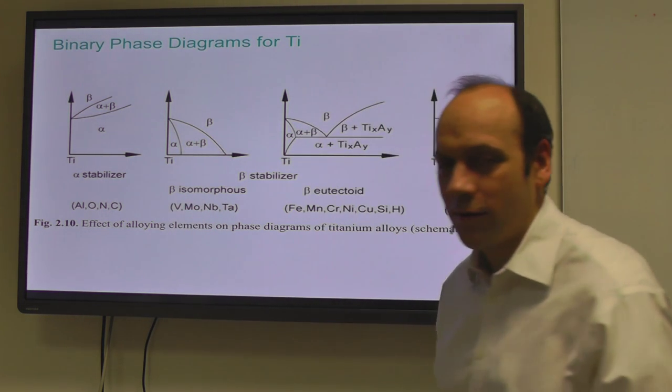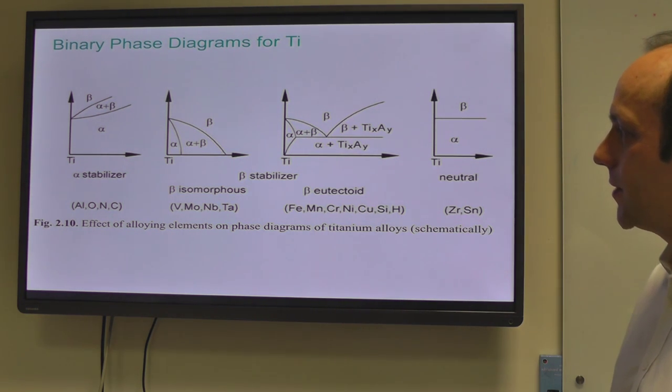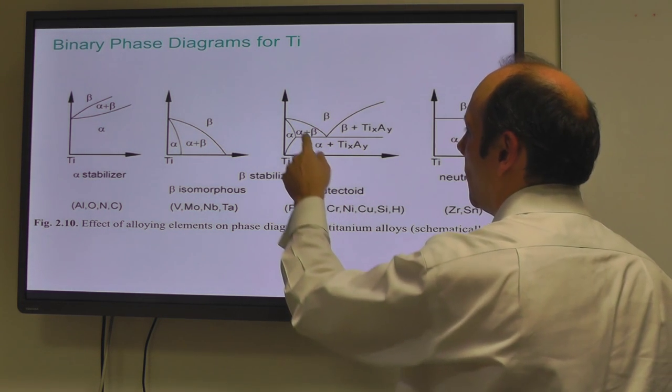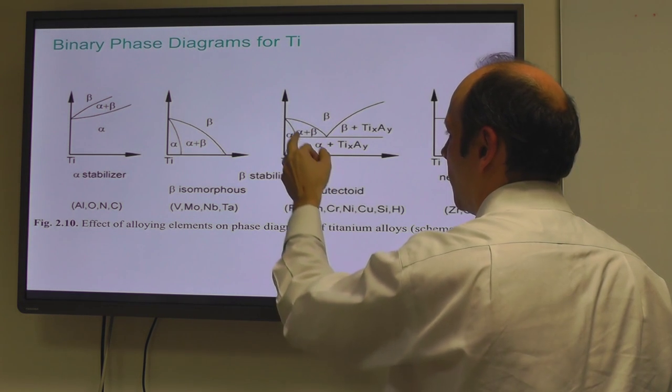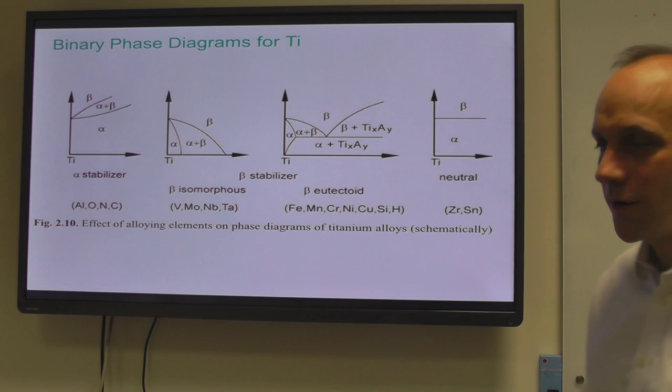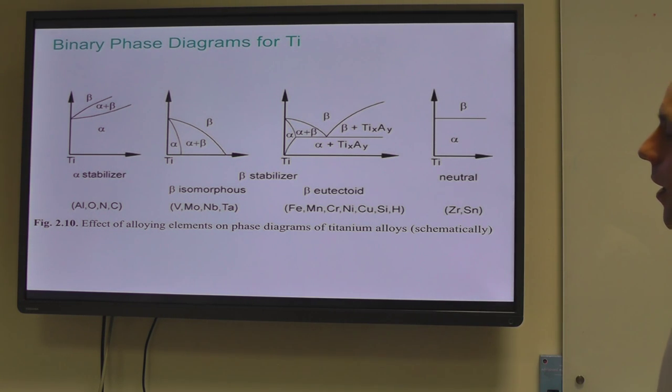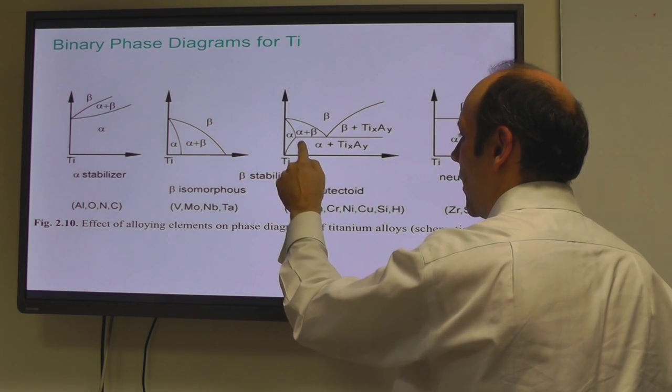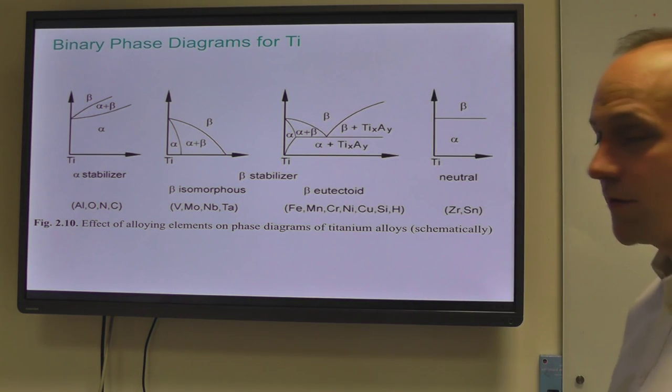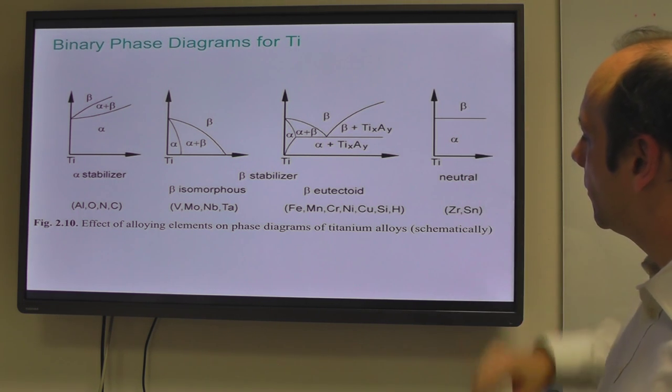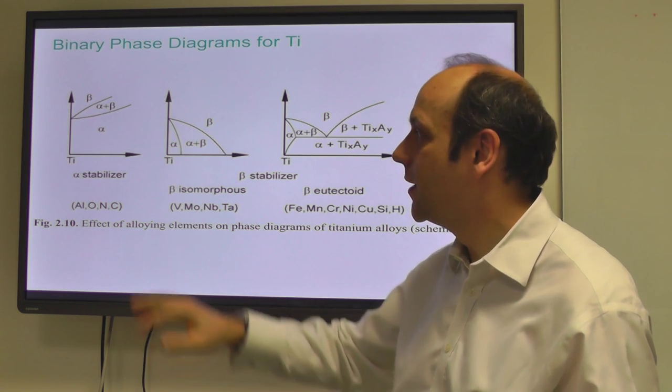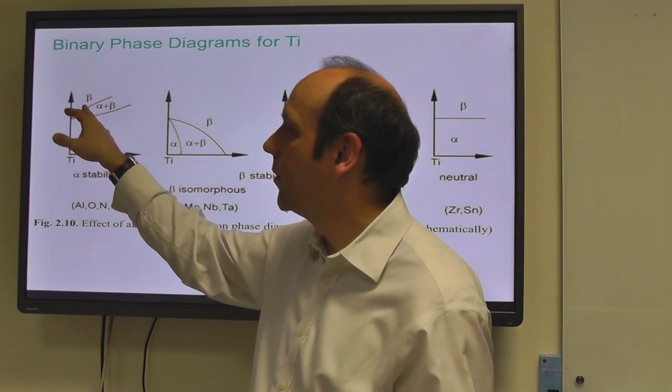The second type of phase diagram are the beta stabilizers. These are alloying elements that lower the beta solvus, that is they reduce the transformation temperature from beta to alpha phase. Potentially you could end up having both phases, alpha and beta, being stable at room temperature, which is common in most titanium alloys. These elements - vanadium, molybdenum, niobium, tantalum - are called isomorphous. There's also eutectoid ones like iron and chromium. If you have small amounts you lower the solvus, if you have larger amounts you stabilize the beta phase. Eventually there's some intermetallic compound. There's also neutral phases like zirconium and tin that don't really change the solvus at all.